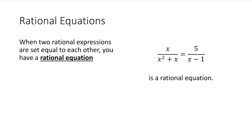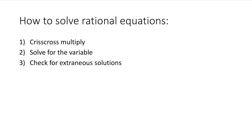So what is a rational equation? We've been working with rational expressions a lot. You have a rational equation when you take two rational expressions and set them equal to each other, as shown in this example. To solve rational equations, you're going to crisscross multiply, solve for the variable, and then check for extraneous solutions.